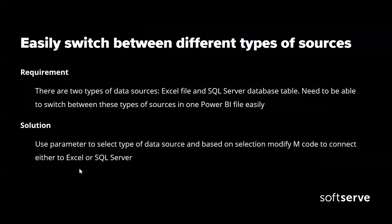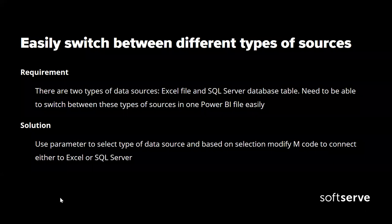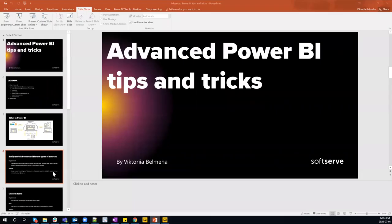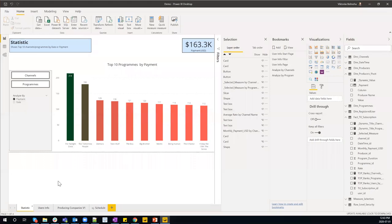Let's move to the main part of our discussion. Our first item is the ability to easily switch between different types of sources in one Power BI file. Your client can have two or even three different data source types where they have data stored in the same structure, and they will want to be able to see and switch between these data sources easily. Let me stop this slide and show you how it can be realized and how it looks.